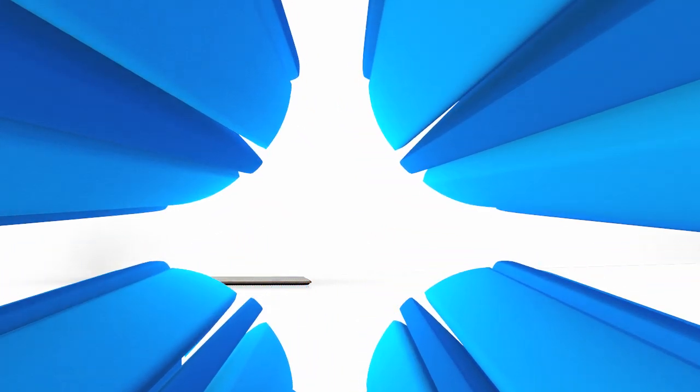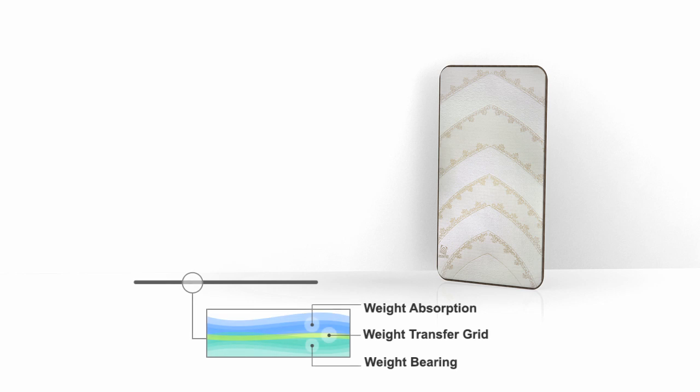At its core is a three-layer system that manages pressure resistance by altering the ratio between the weight absorption and bearing layers. When pressure is applied, the ratio between the absorption and bearing layers alters to respond to your body weight, posture, and motion.